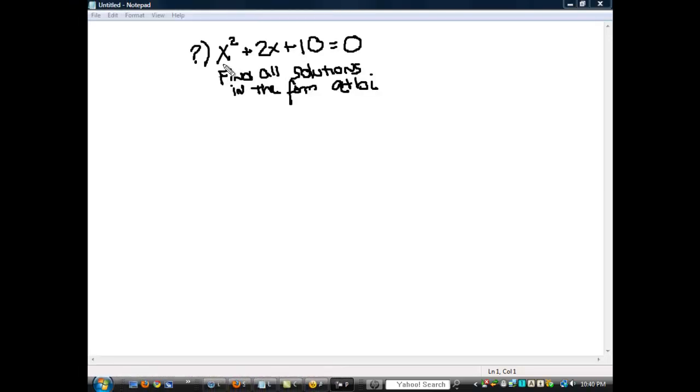All right, so we've got a question. The question is x² + 2x + 10 = 0. We want to find all the solutions in the form a + bi.